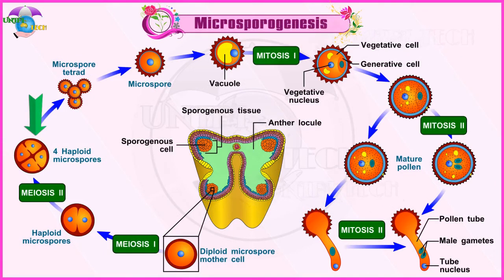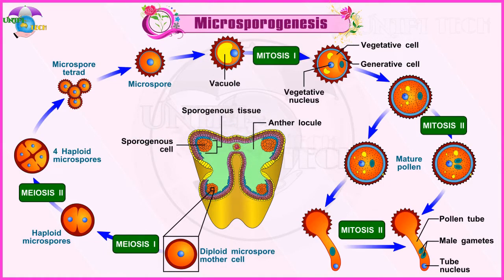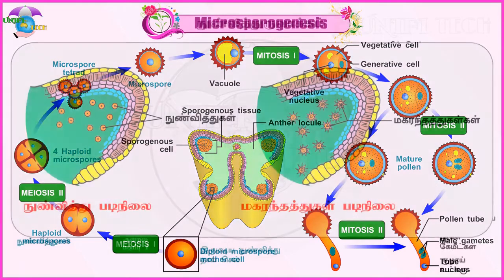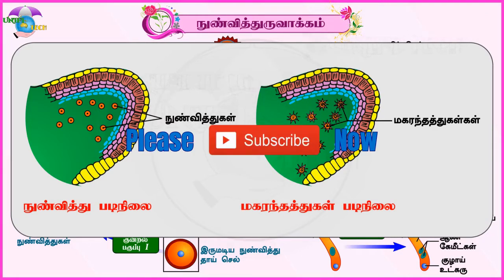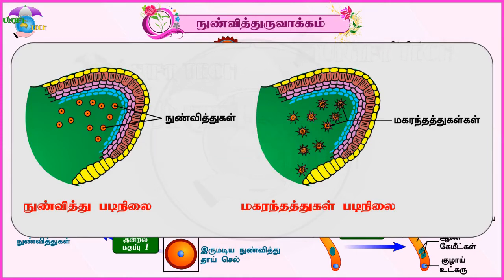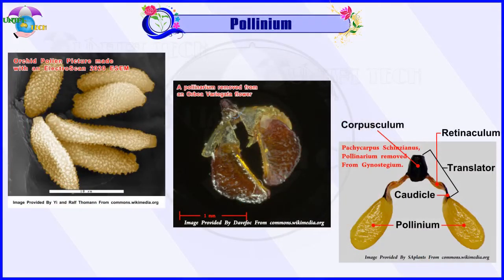Microspores soon separate from one another and remain free in the anther locule, and develop into pollen grains. (Tamil: They separate individually and remain free in the anther locule, developing into pollen grains.)